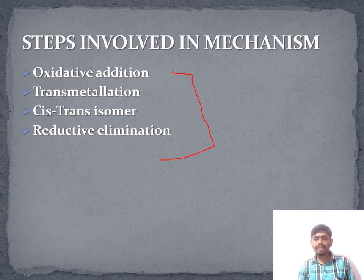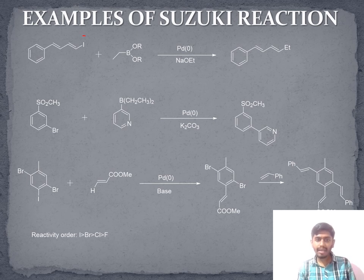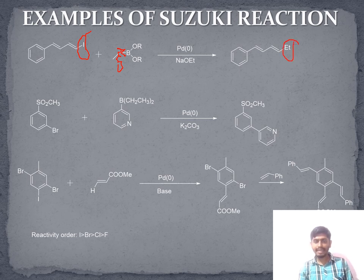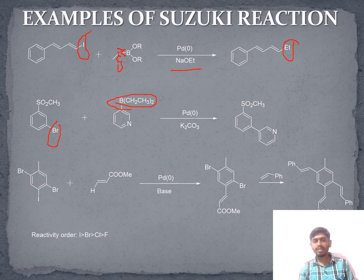Let's discuss some examples of Suzuki coupling reactions. In the first example, the iodine is replaced by an ethyl (ET) group attached to boron, so the ET group is attached at the iodine's position. NaOEt is used as a base in this first example. In the second example, there is a bromine group which is replaced and a C-C bond formation takes place.